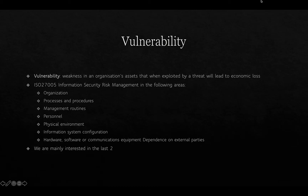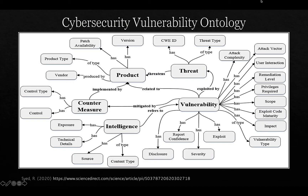The areas we're most interested in — when talking about vulnerabilities — are really the last two: dependence on external parties and information system configuration. This brings us to looking at ontologies of vulnerabilities.